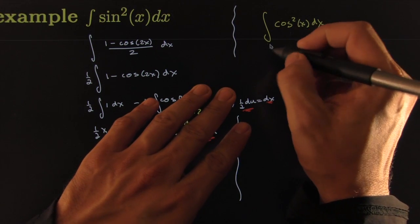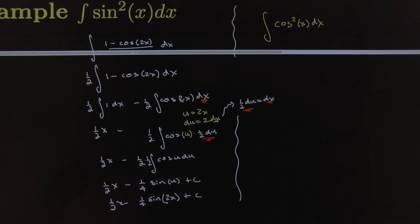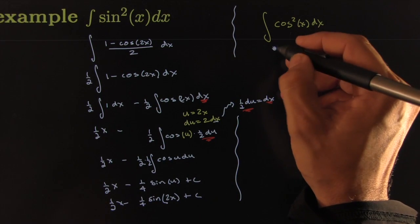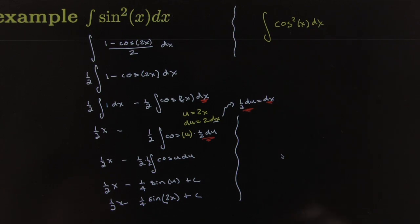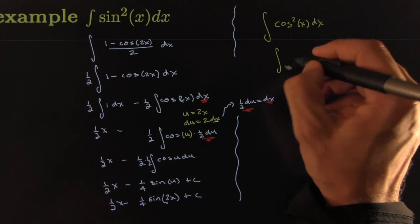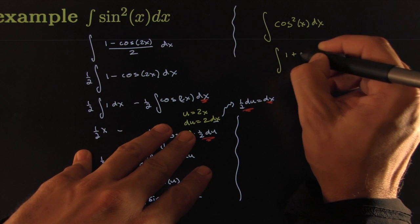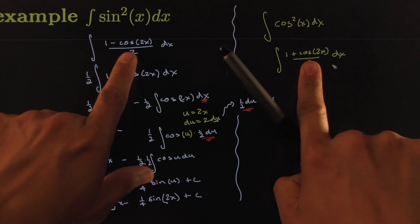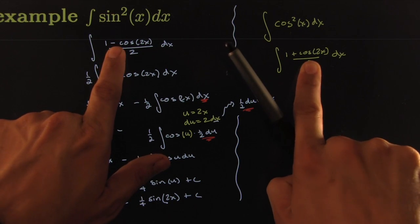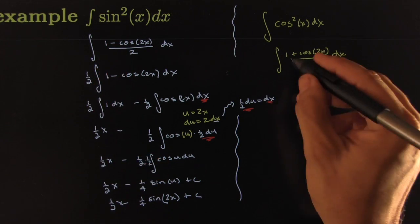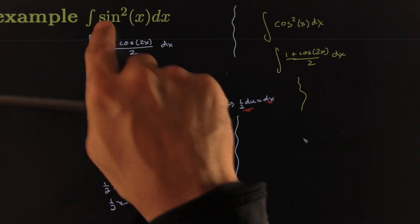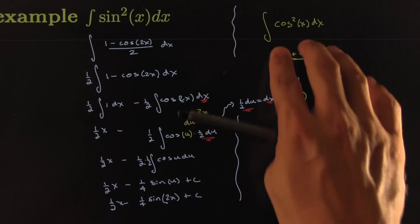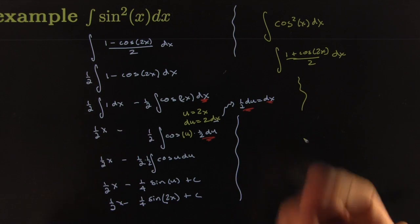This one would turn into the integral of 1 plus cosine 2x, all over 2, dx. It's almost the same identity as this one, except sine has a minus, cosine has a plus, and then the rest of it would be similar. So there's sine square and cosine square—these are famous ways to tackle them. They're not the only way to do it, but certainly they work. We'll see you here next time. Peace.